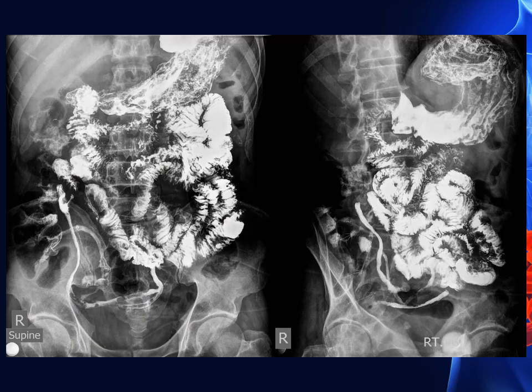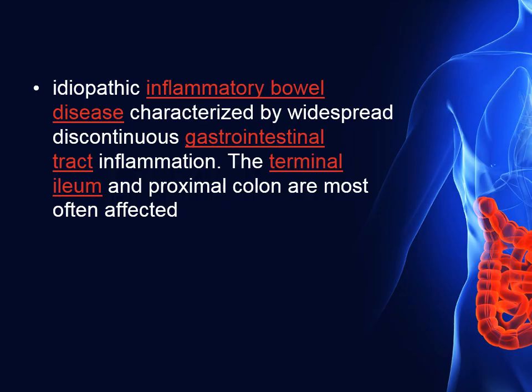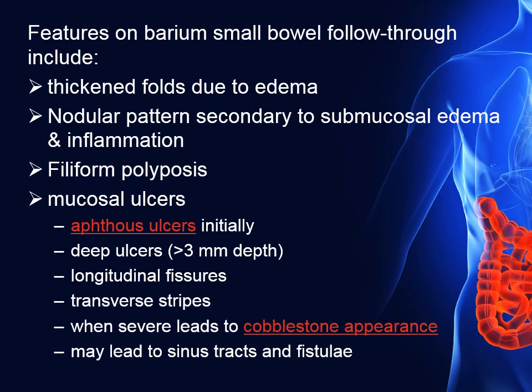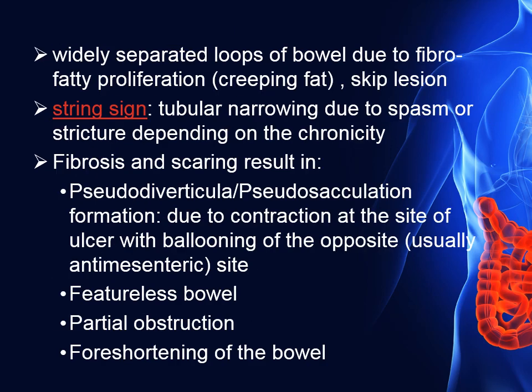The second pathology we have is Crohn's disease. It is a chronic inflammatory bowel disease with unfortunately no specific etiology until now. It is characterized by widespread discontinuous gastrointestinal tract inflammation. The terminal ileum and proximal colon are the most commonly affected. The signs we can detect include: thickened folds due to edema, nodular pattern secondary to submucosal edema and inflammation, filiform polyposis, mucosal ulceration, widely separated groups of bowel loops due to fibro-fatty proliferation, skip lesions, string sign, fibrosis, and scarring.